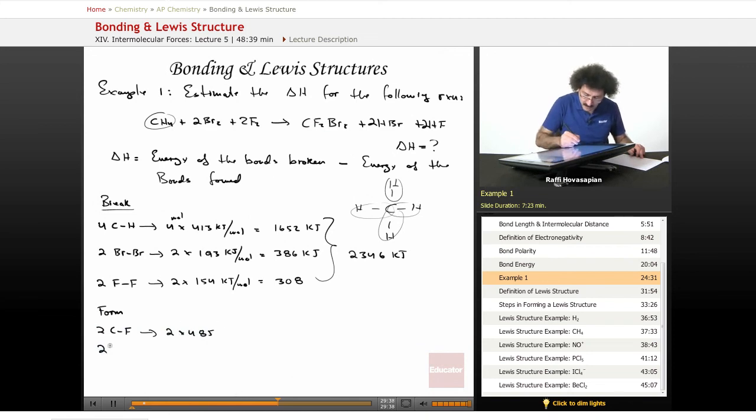We form two C-Br bonds. That's going to be two times 276. We form two H-Br bonds. That is two times 363. And we form two HF bonds, which is two times, wow, 565. That's a bit of a surprise.